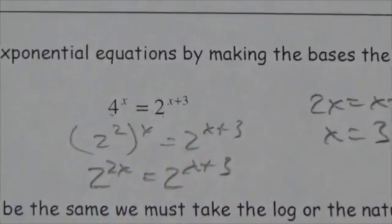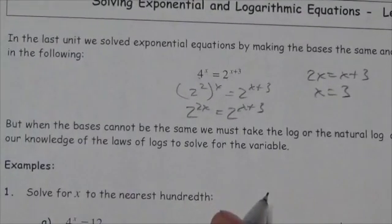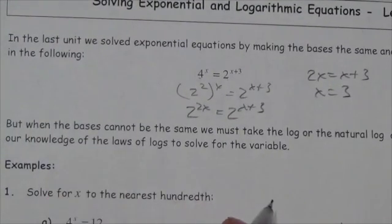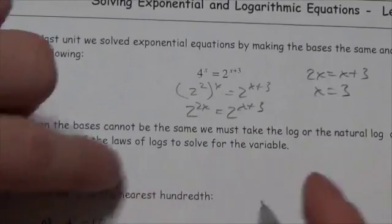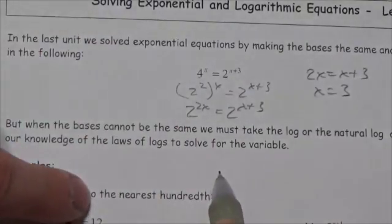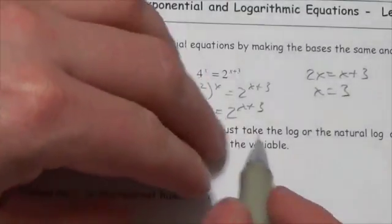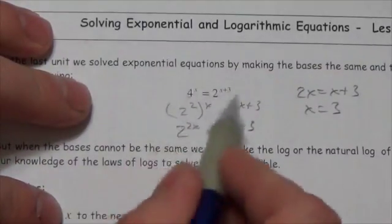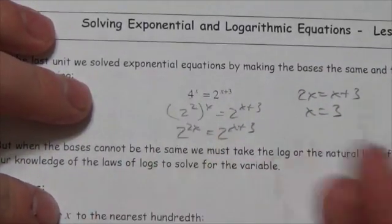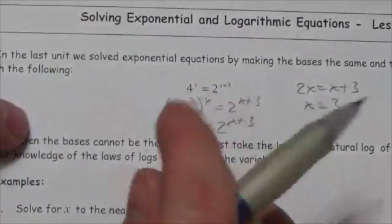Sometimes the bases just aren't comparable. So what we do in that case is we're going to end up taking the log of both sides — whether that be the natural log or the common log. Taking the logarithm of both sides will enable us to pull down the exponent. You've got to think about that power law: when you've got an exponent inside a logarithm, you can write that exponent out front. That's what's going to allow us to solve equations that don't have that nice comparison between the bases.